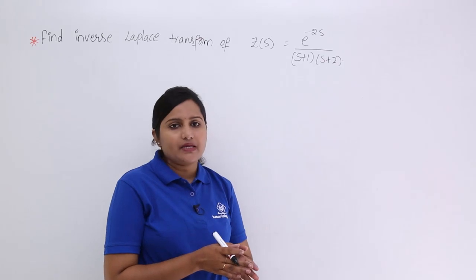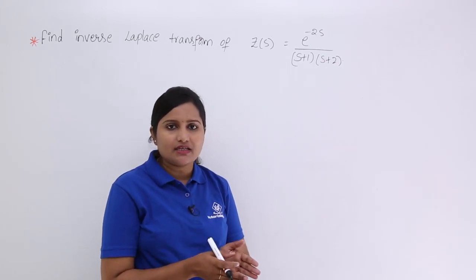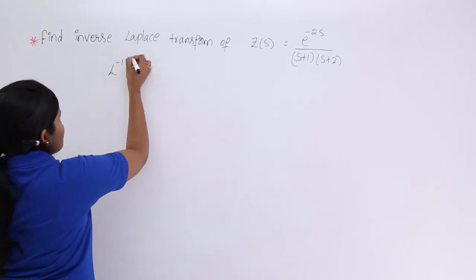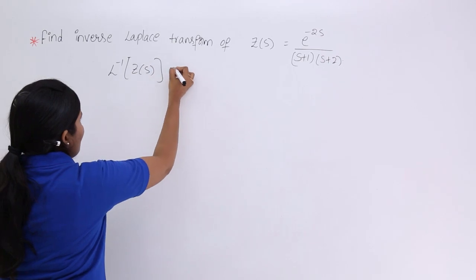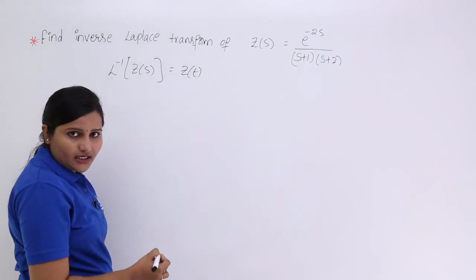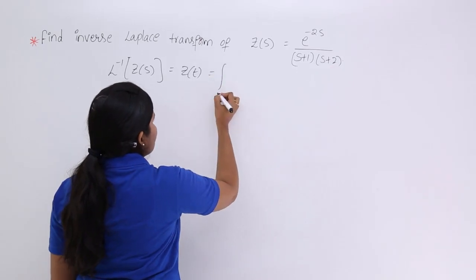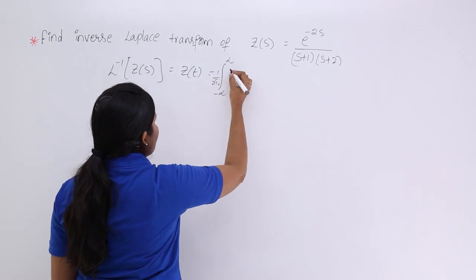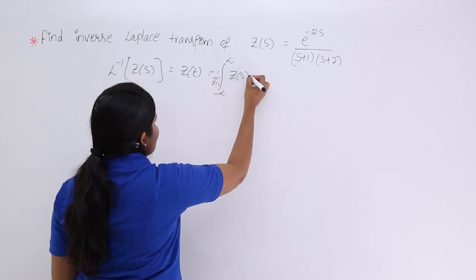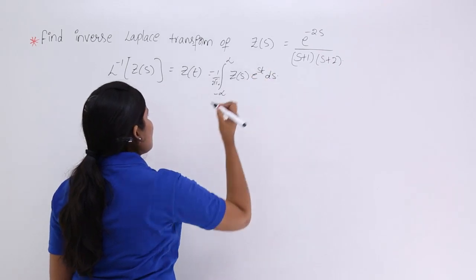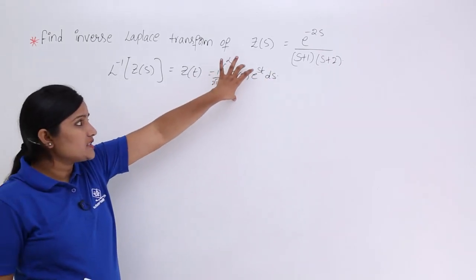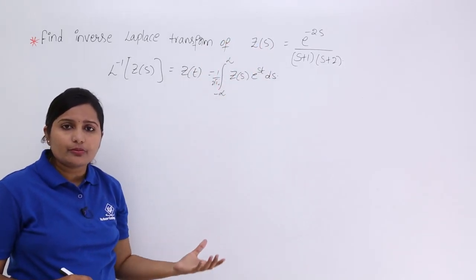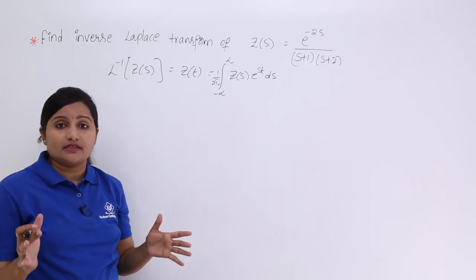The standard inverse Laplace transform equation is: the inverse Laplace of X(S) equals X(T) equals 1/(2πj) times the integral from minus infinity to infinity of Z(S) times e^(ST) dS. Using this equation, you would need to substitute Z(S) and carry out the full calculation.